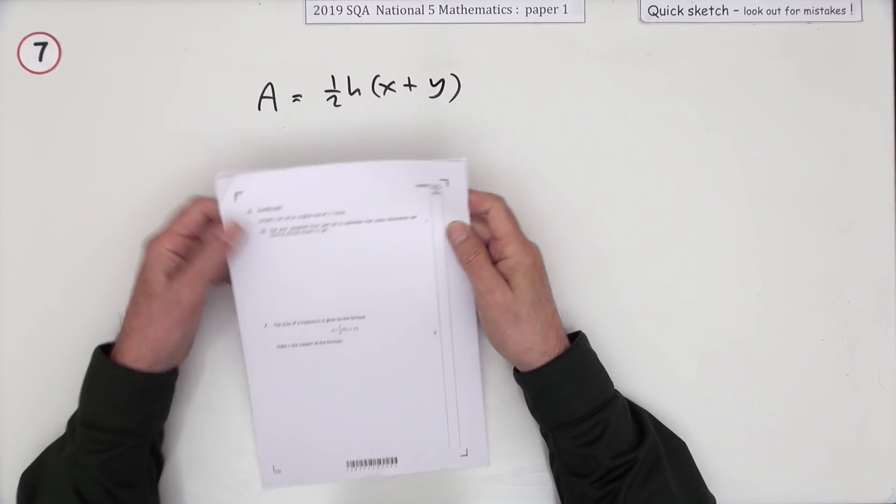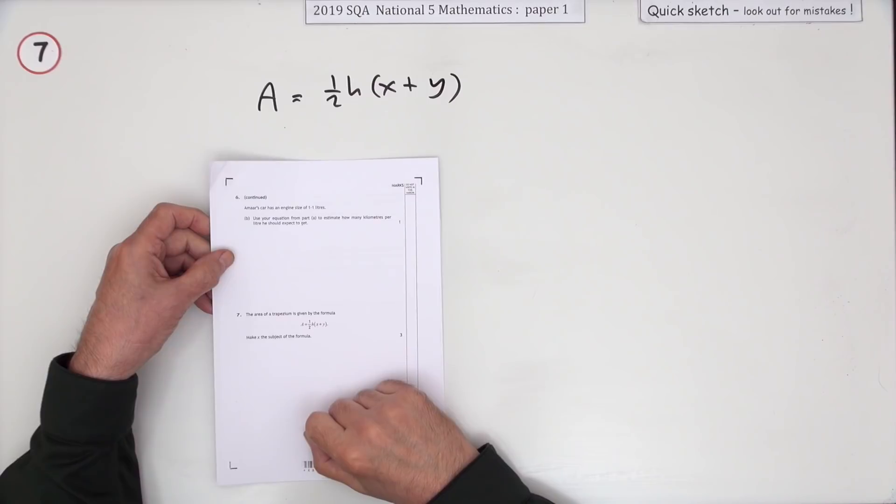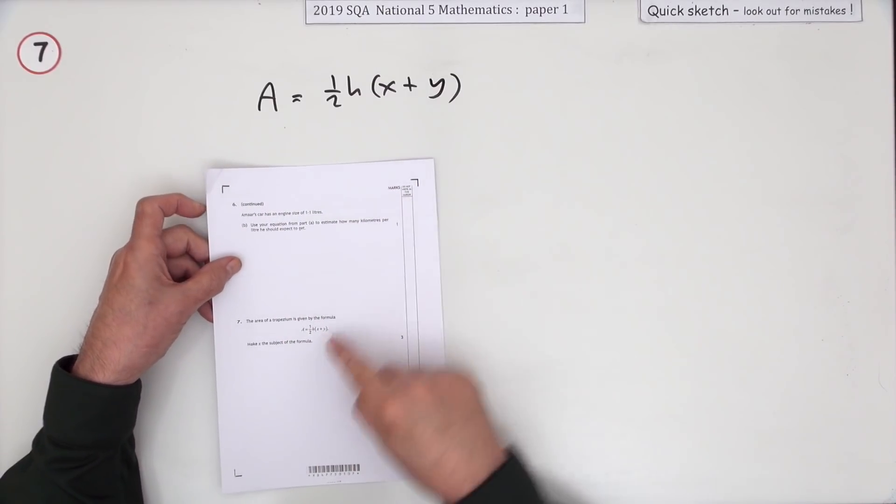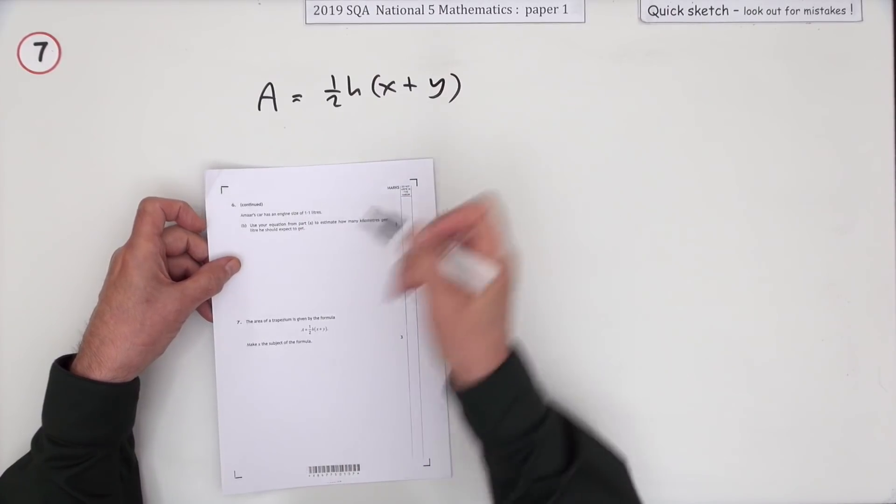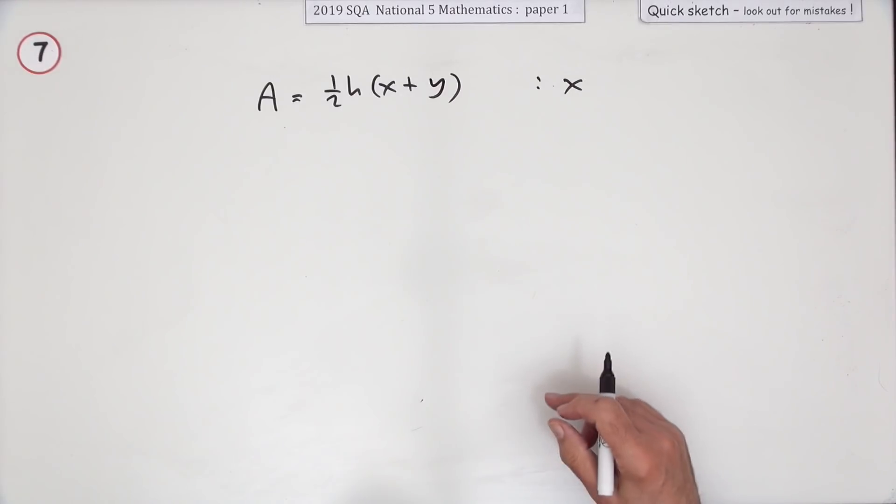Number seven from paper one of the National 5 2019. Change the subject of a formula - the area of a trapezium is given by this, but you don't really care because all you want to know is what am I changing it into. It says make x the subject of the formula for three marks.